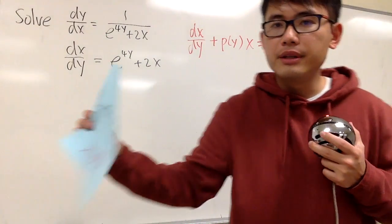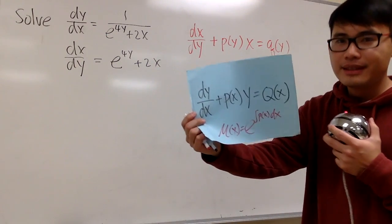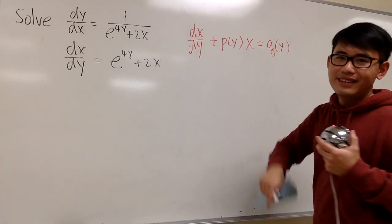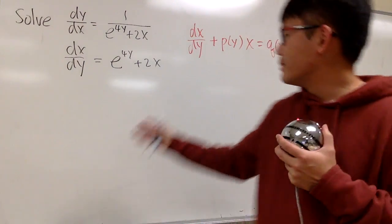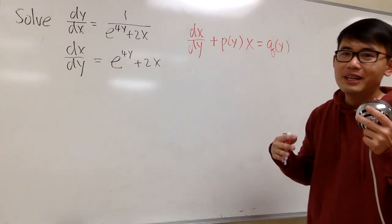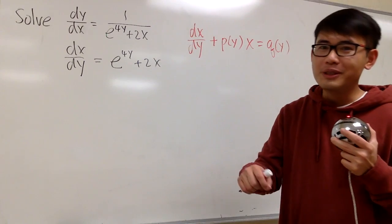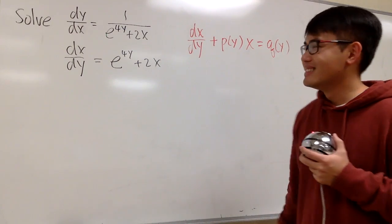And on the right-hand side, I want to have another function called q(y). So if you compare this again, so I'm just switching the x and y, like that, right? So let's make this happen, and we can use the integrating factor, right, in terms of e to the integral of p(y).